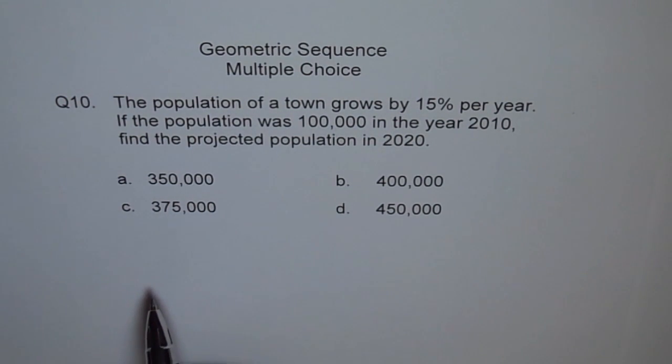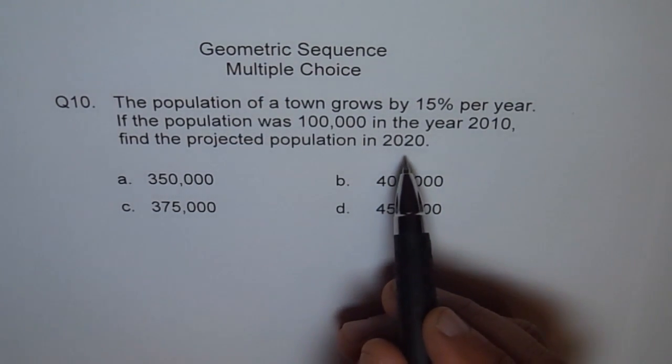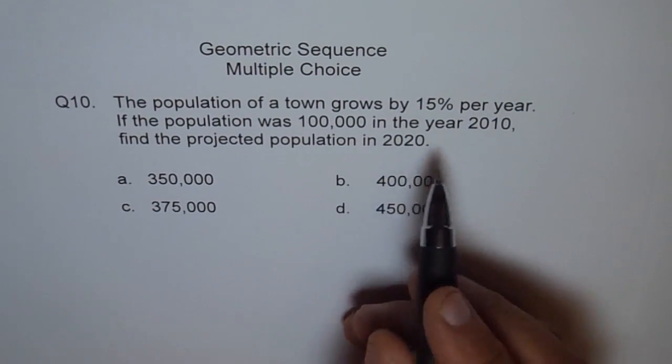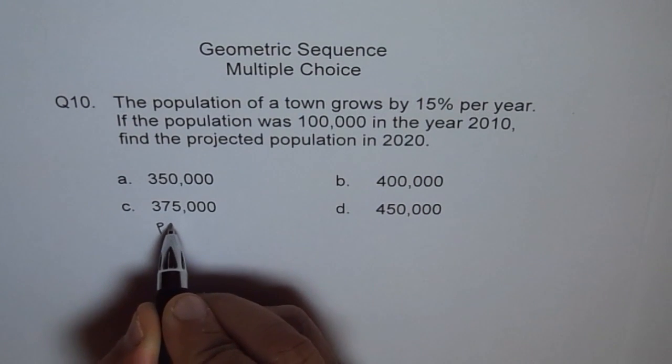So every year it grows by 15%. From 2010 to 2020, the population will grow within a span of 10 years. Therefore we can write population will be, net population in 2020, that is after 10 years.